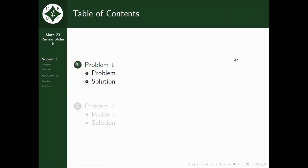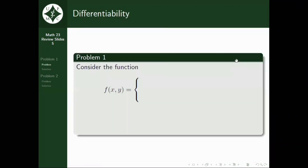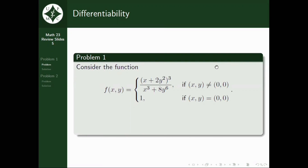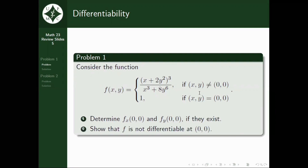Now let's go to the first item. We consider the function f — in particular, it's a piecewise function given these conditions. If (x, y) is equal to the origin, the value of f is 1. And if (x, y) is not equal to (0, 0), we have to consider this expression. Here we are asked to determine the value of f sub x of (0, 0) and f sub y of (0, 0), if they exist. Next, we are asked to show that f is not differentiable at (0, 0).